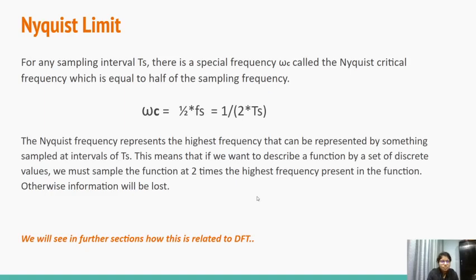This means that suppose if you have a continuous function containing frequencies 2 and 4 hertz that you want to sample, the sampling frequency must be higher than 8 hertz. Otherwise the information will be lost. We have seen in further sections how this is related to DFT.